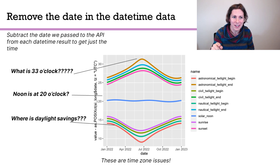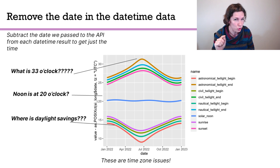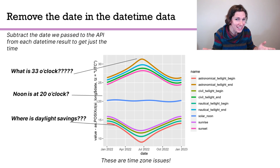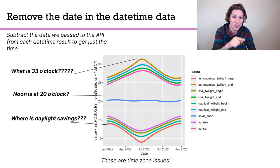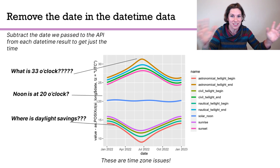We get those nice squiggles, but oh wait — now this chart has a 33 o'clock, it has a noon at 20 o'clock, and there is no daylight savings, it's just a smooth line. Those all seem like problems, and once you think about it, they all turn out to be time zone problems, because this is not in the right time zone for Seattle — this is in UTC. If you're dealing with a 33 o'clock and time zones, that puts you in okay.